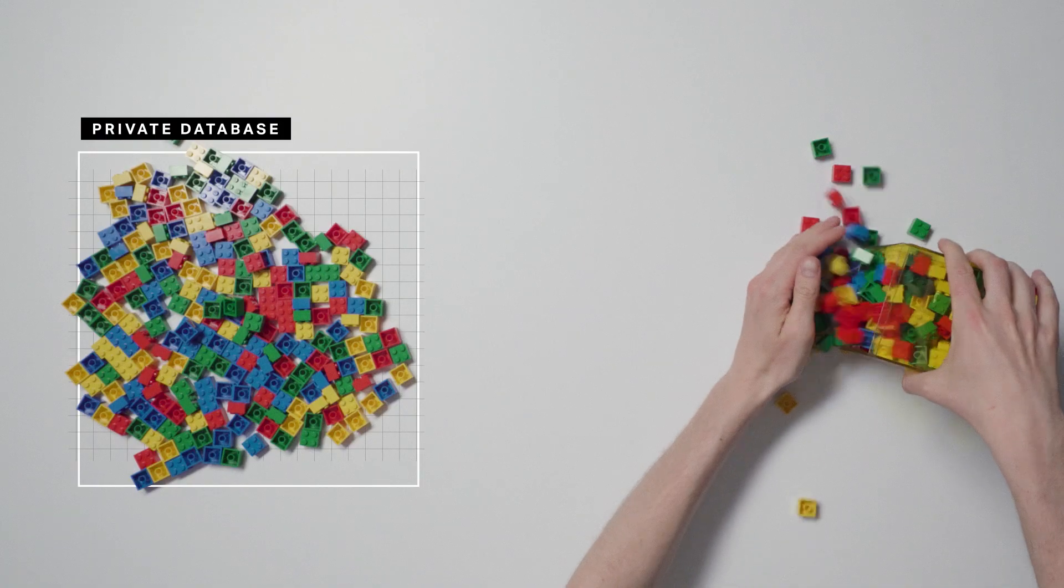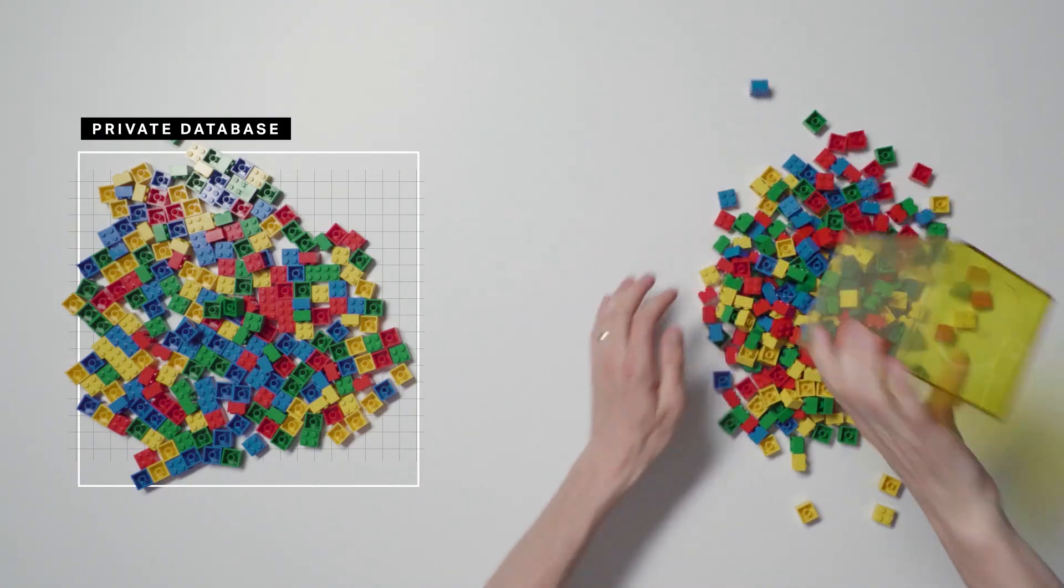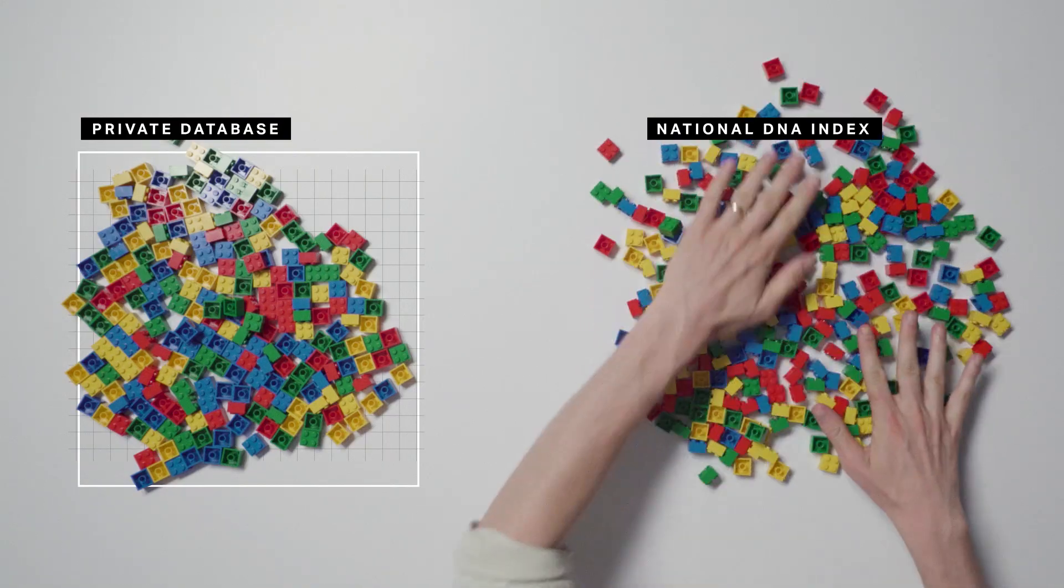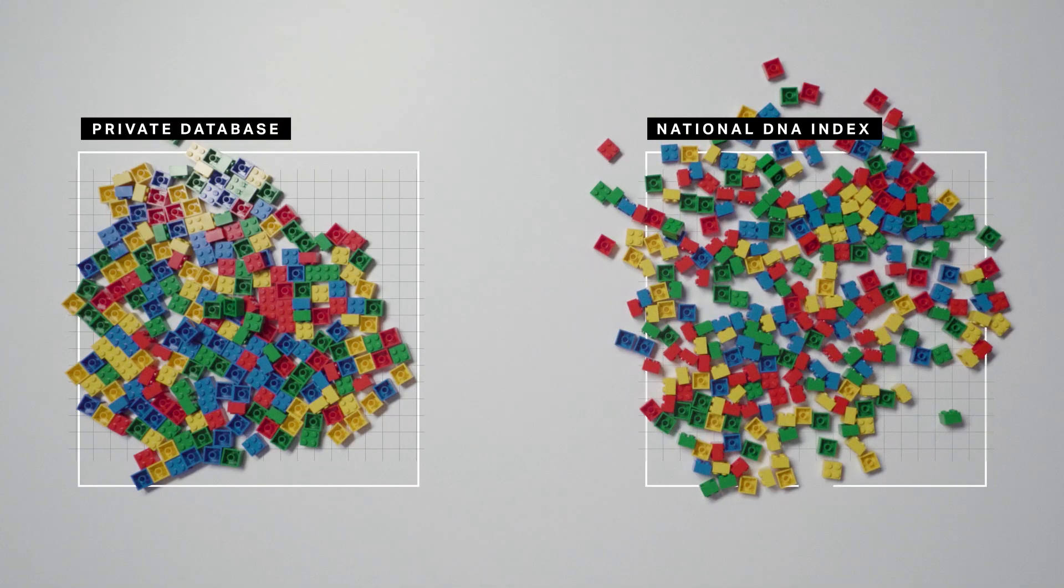Second, the FBI does operate a national DNA index with around 17 million identified people in it. And some states allow the index to be used for familial searches. But those 17 million people are all arrestees and offenders, so unless the suspect had relatives in the criminal system, it's not much help.